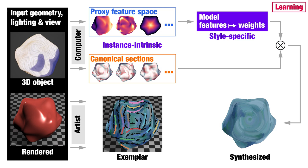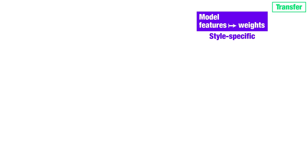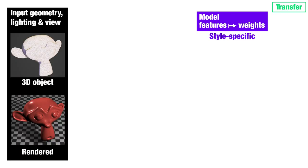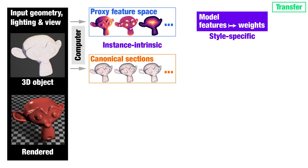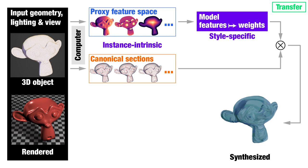The model is trained to minimize the error between the produced orientations and the orientations specified in the exemplar. Our formulation allows us to use simple linear regression for the learning, and the resulting model offers an interpretable representation of brush strokes. With the model at hand, given a new object, lighting, and viewing conditions, we can compute the object's instance intrinsic quantities and use the learned model to transfer the style onto this new setting.